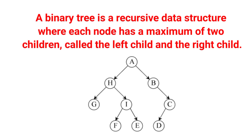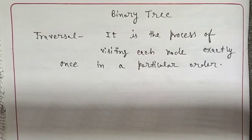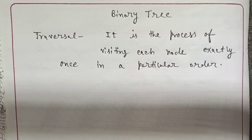A binary tree is a recursive data structure where each node has a maximum of two children — that is, left child and right child. Hello everyone, welcome to Knowledge Circle. In this video we will see binary tree traversal.